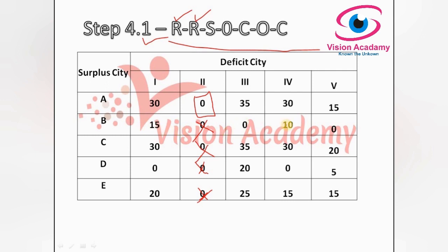In the third row, the one zero has already been crossed out. In the fourth row, there is one remaining zero and one more zero — two zeros are left after crossing out, so we cannot assign. In the last row, there are no zeros. This completes the row treatment for step 4.1: identify the single zero, give a rectangle, and cross out all other zeros in the corresponding column.